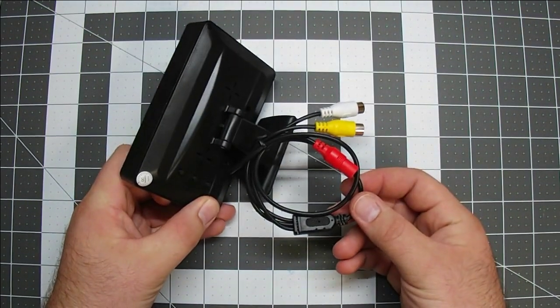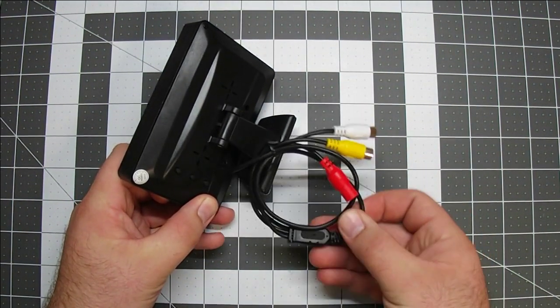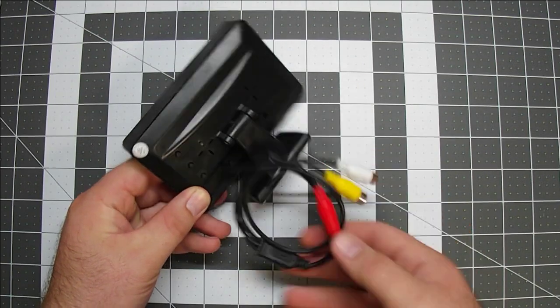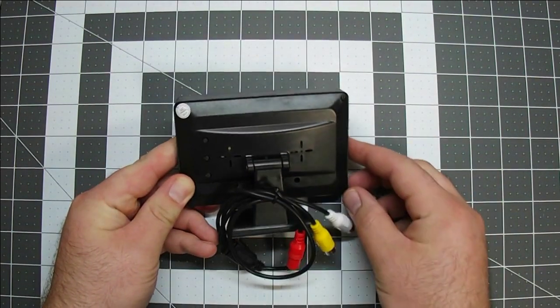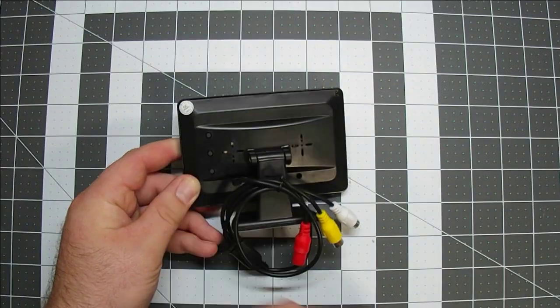I'm going to be soldering on my own custom wiring harness so I'll have to remove this wiring harness, and to do that I'm first going to remove these two screws.